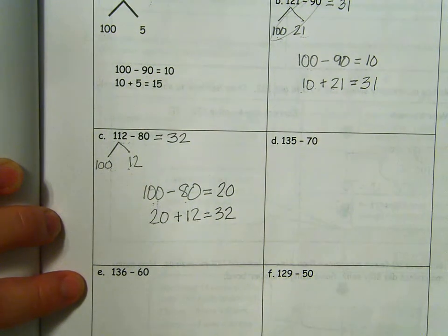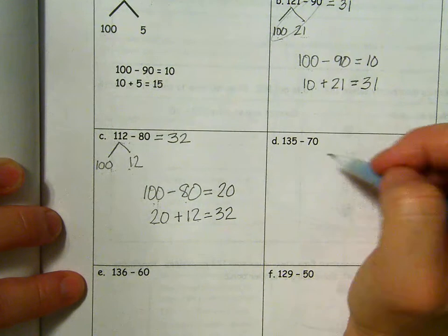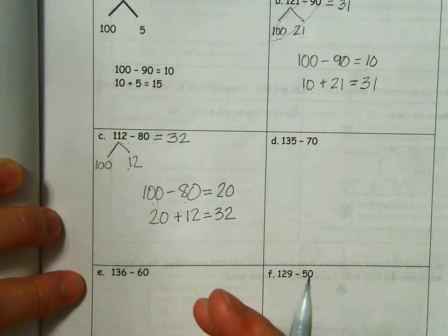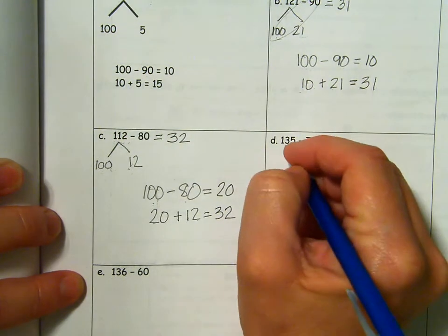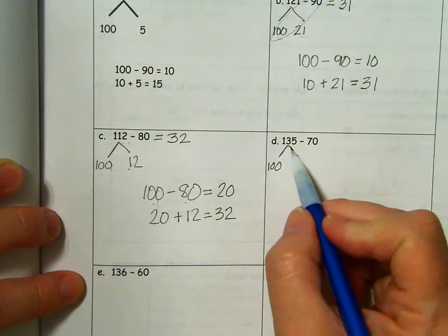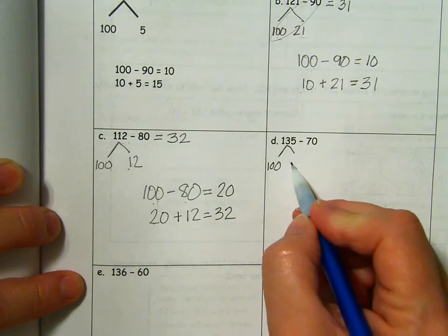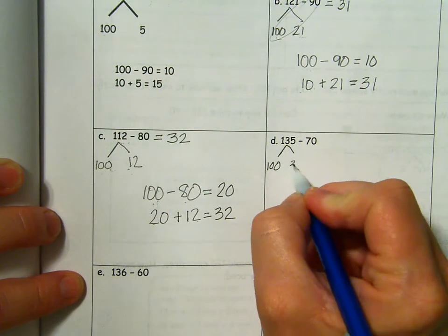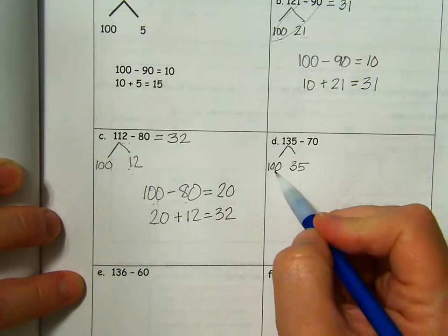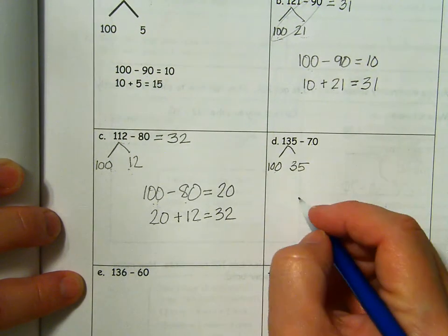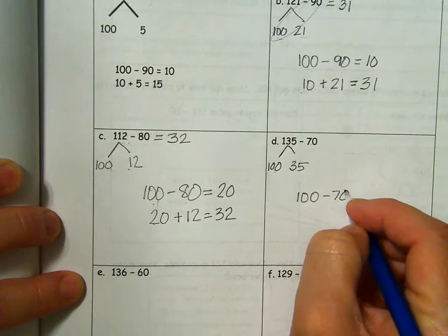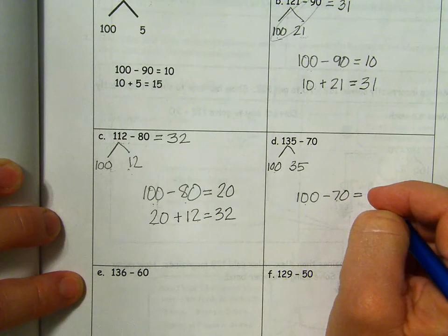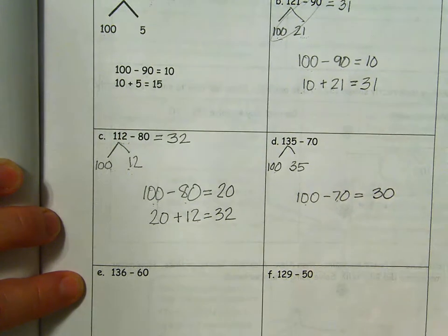So how would you do this one? 135 minus 70. What do we want to get? We want 100. I'm going to take 100 out of 135. What do I have left? I'm breaking it into 100. What's the other part? 35. 100 minus 70. That is a much simpler problem. 10 tens minus 7 tens is 10 minus 7 is 3 tens or 30.